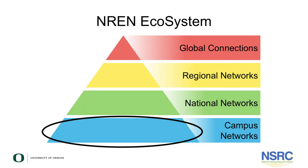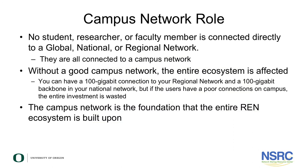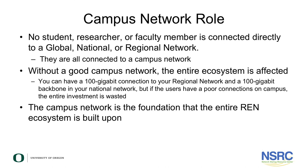Finally, let's talk about the campus network. The campus network plays a key role in this ecosystem. It is the portion of the ecosystem that provides connectivity to the actual users. No student, instructor, or researcher is connected to the national, regional, or global network — they are all connected to the campus network. If the campus network is deficient, then the user experiences poor service. The community spends literally billions of dollars per year on the global, regional, and national networks, but without good campus networks, that investment is not effective. The campus network really is the foundation that the entire ecosystem depends on to support an effective research and education system.